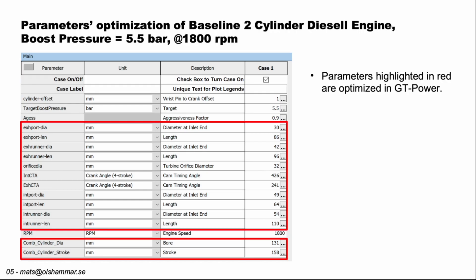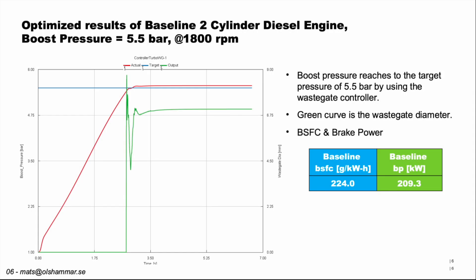These are the parameters that we are optimizing with the optimization feature in GT Power, and we have set the boost pressure to 5.5 bar. Here we can see that we have a target value in blue at 5.5 bar and the actual in red is reaching 5.5 bar and stabilizing. The green curve is showing the waste gate controller — the opening of the waste gate — and that is also stabilized. So now we have stable data.